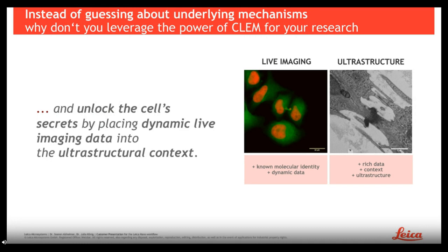We start our sample preparation on the living sample and image our cells in a living state until they reach the moment of interest. The advantages of live cell imaging is that we know the molecular identity because of the fluorophores we use, and we have all the dynamic data to check that we are really looking for the phenotype we are interested in and that we really catch the moment that is interesting for our ultra-structural analysis. On the EM side, we then have the ultra-structure that gives us the rich context and the high resolution to really see in detail what's going on. So in the end, we combine the advantages of both worlds to get a much more complete picture of the function or the structure of our event of interest.